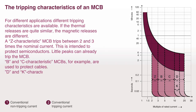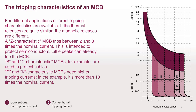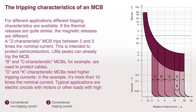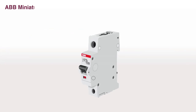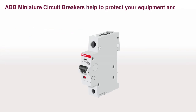D and K characteristic MCBs need higher tripping currents — in the example, more than 10 times the nominal current. Typical applications are electric circuits with motors or other loads with high start-up currents. ABB miniature circuit breakers help to protect your equipment, and therefore your property.